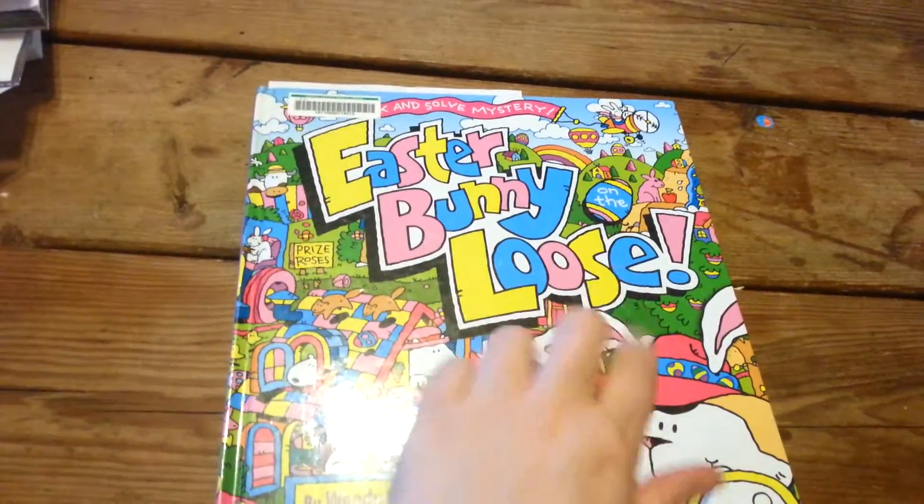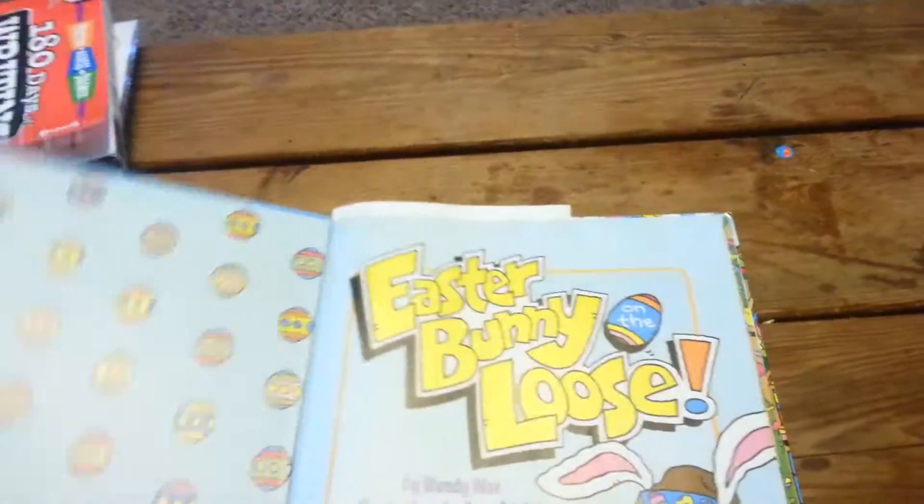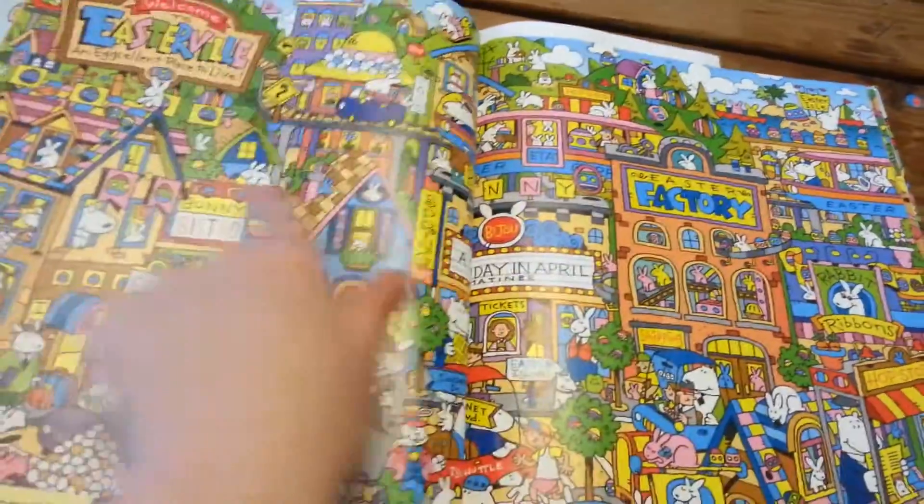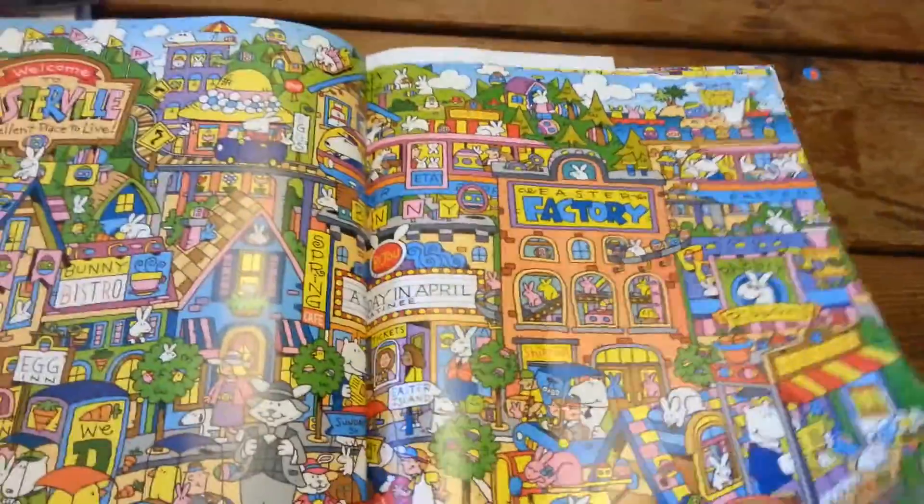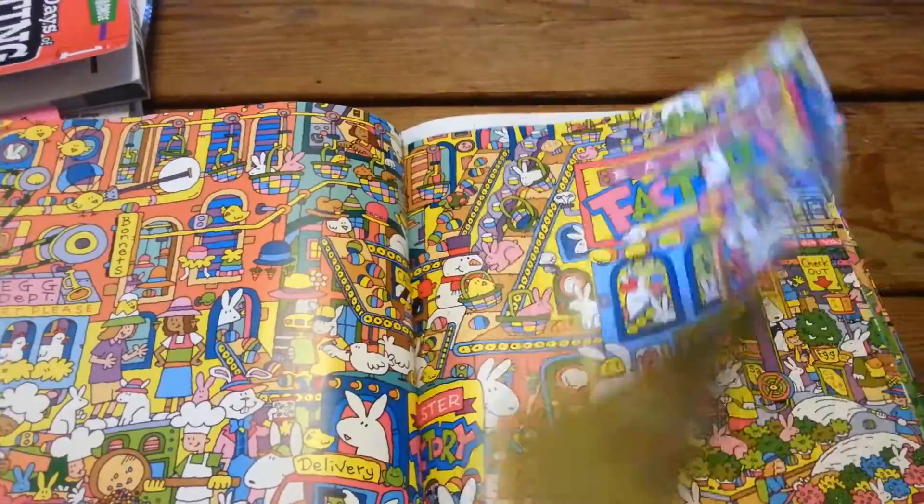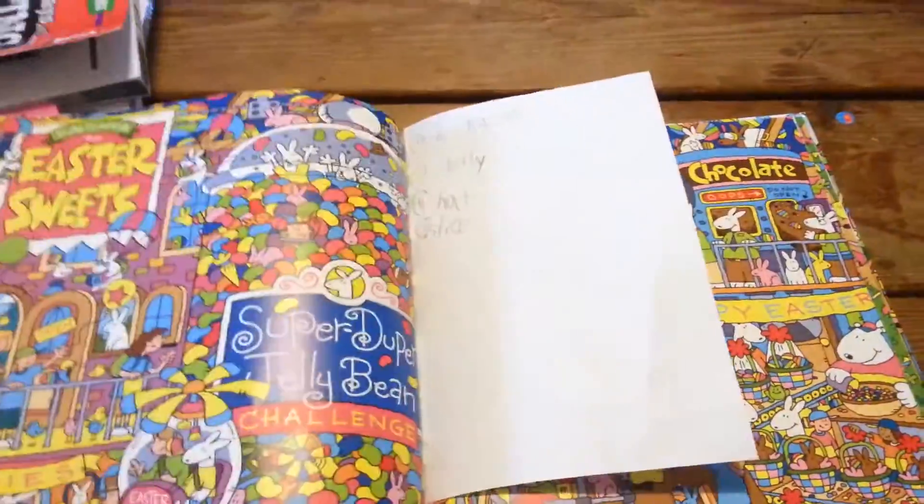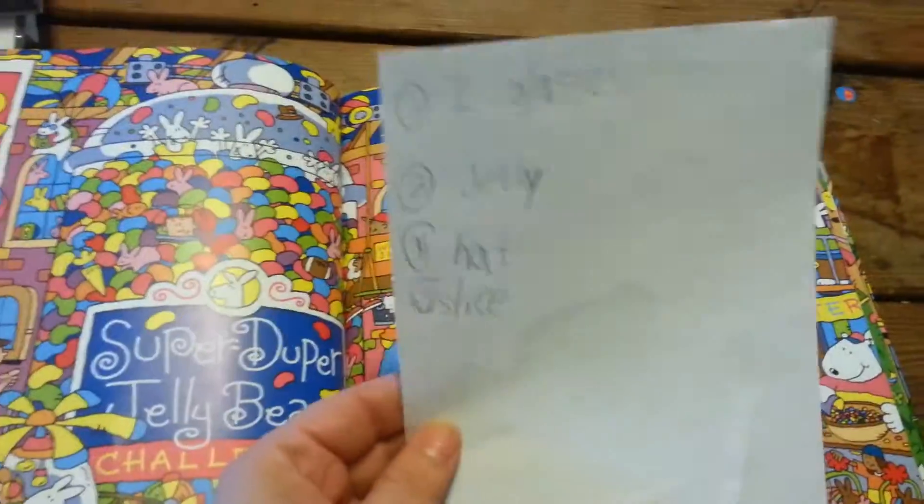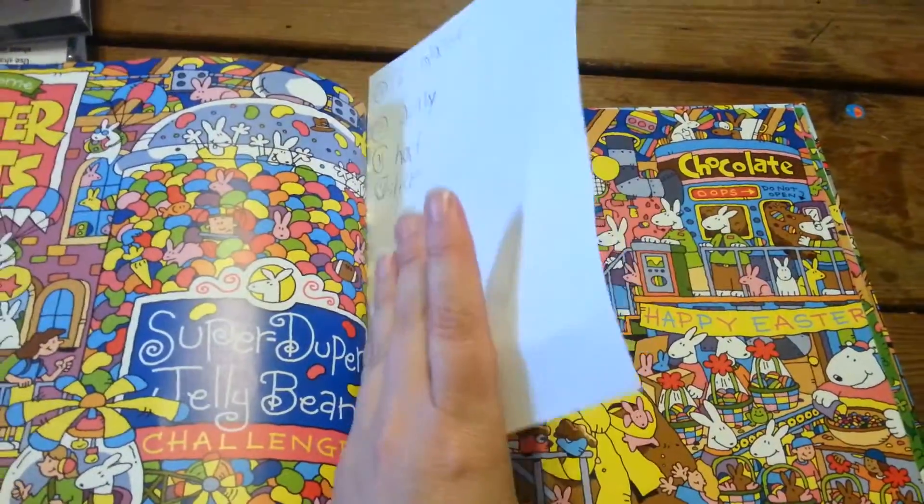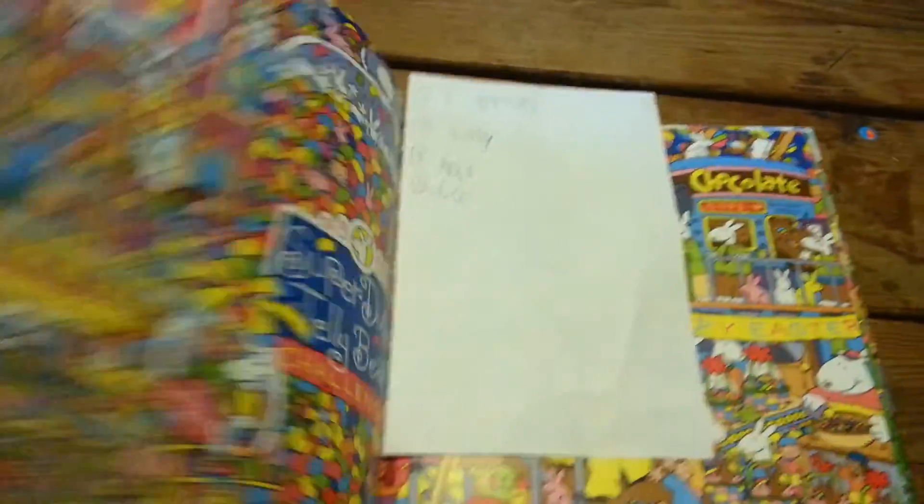Anyways, for fun, we got this book from the library. I know it's not Easter, but he wanted to use it. You basically go through the pages and you're supposed to find the Easter Bunny on each page. The Easter Bunny usually has little things that he's holding to give you clues, and he's been writing them down. He's done already four of these pages, writing down what the Easter Bunny is holding until he gets to the end of the book.